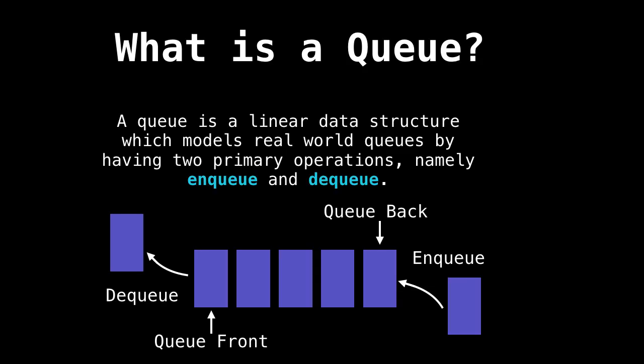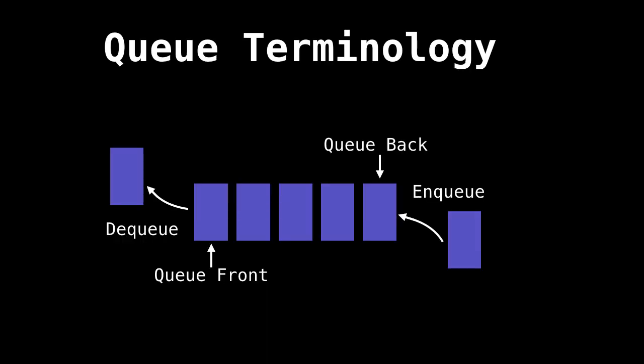So what exactly is a queue? Below you can see an image of a queue. A queue is a linear data structure that models a real-world queue, having two primary operations: enqueuing and dequeuing. Every queue has a front and a back end. We insert elements through the back and remove through the front. Adding elements to the back is called enqueuing and removing elements from the front is called dequeuing.